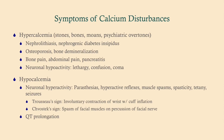Trousseau and Chvostek signs are classic but so stereotypical that you probably won't be tested on them directly. Hypocalcemia can cause QT prolongation, while hypercalcemia can cause a short QT interval. Because both are arrhythmogenic, it is worth getting an EKG on a symptomatic hyper- or hypocalcemic patient.